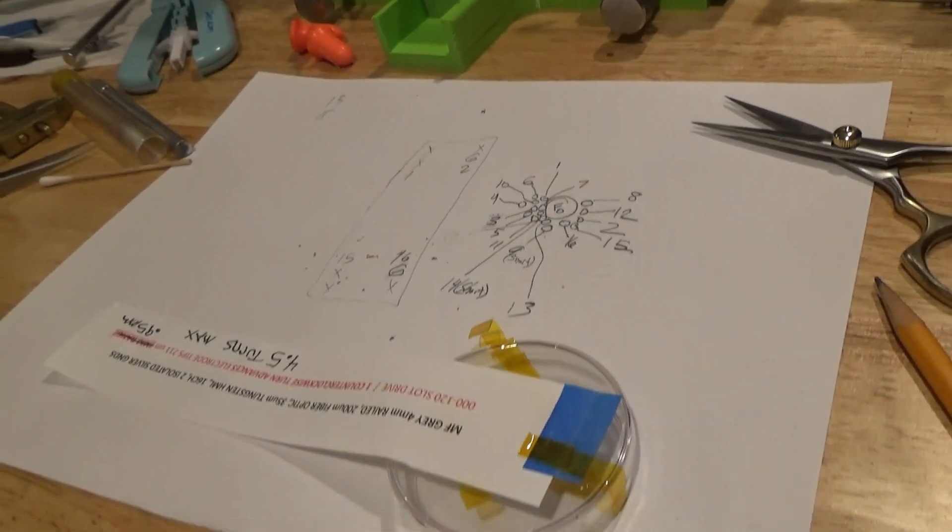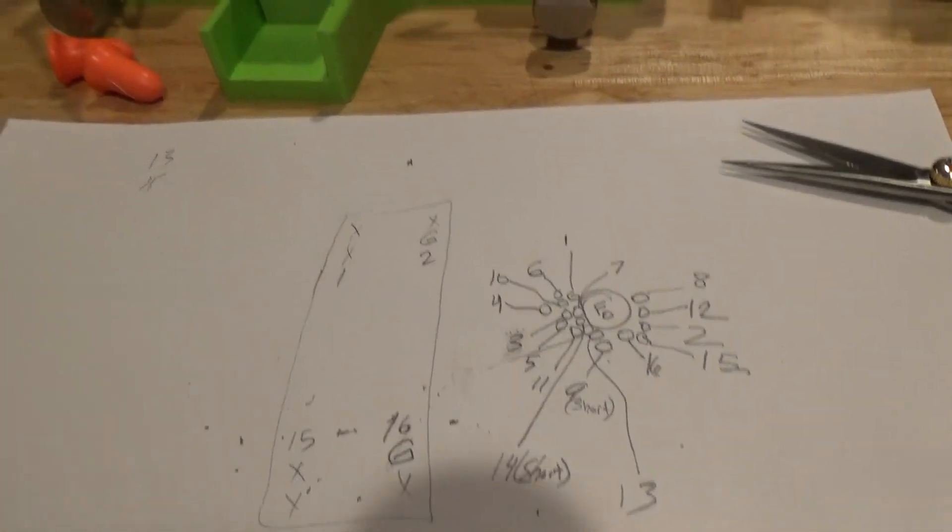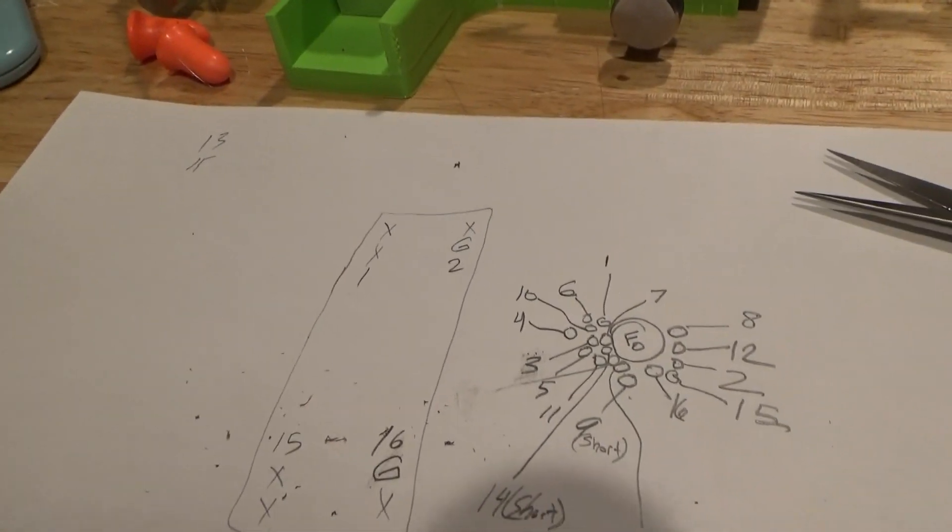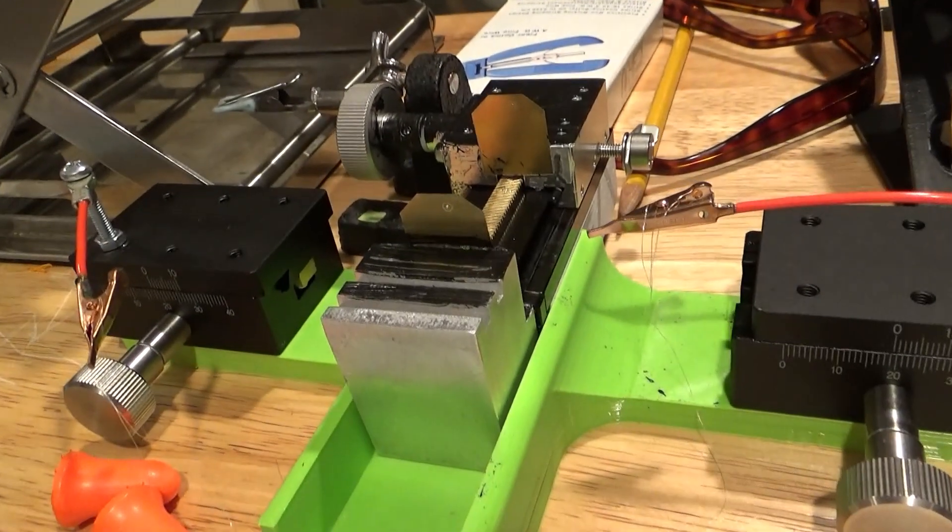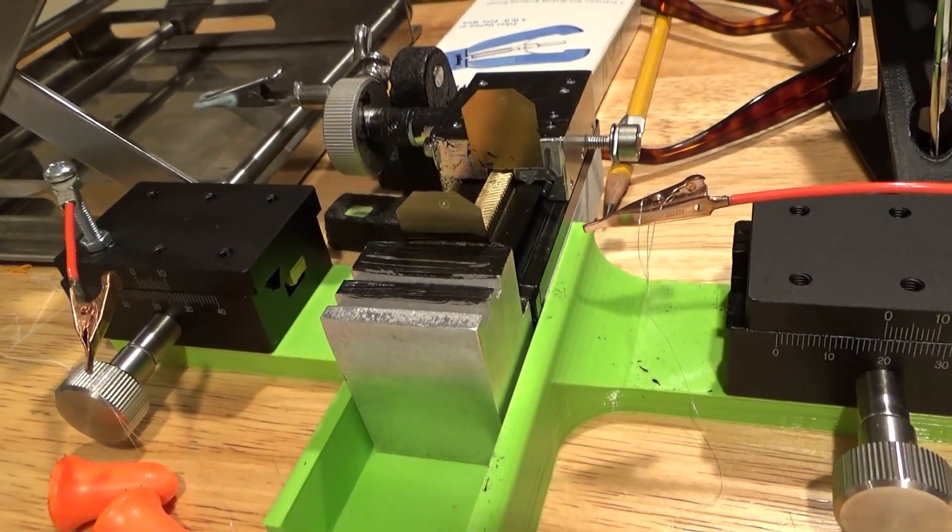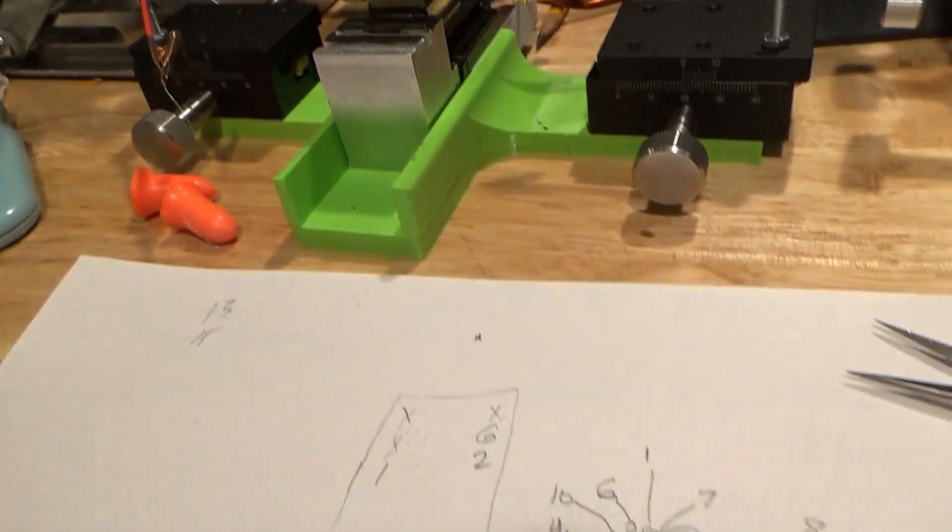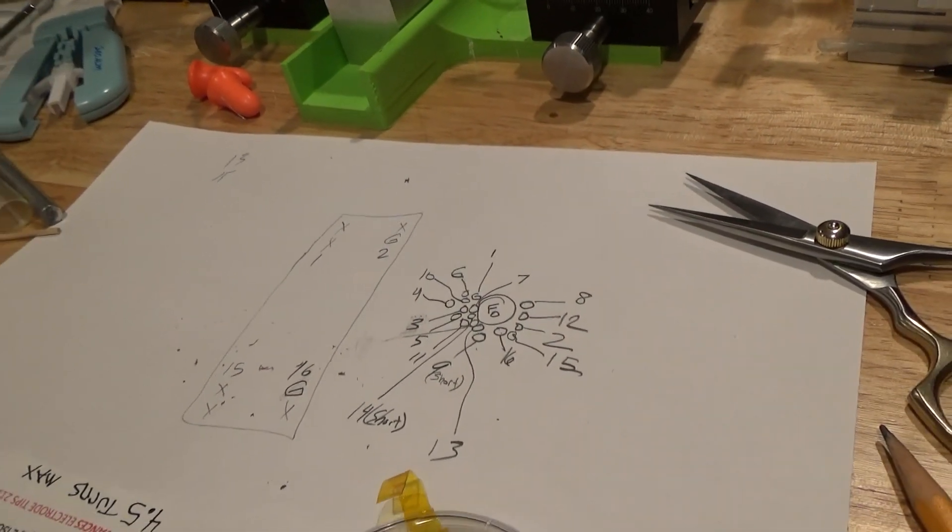In the future, we'll probably make these electrodes using an array method instead of a bundle. I'll be using a machine like this to properly form arrays, and we'll be able to track the channels in an easier fashion.